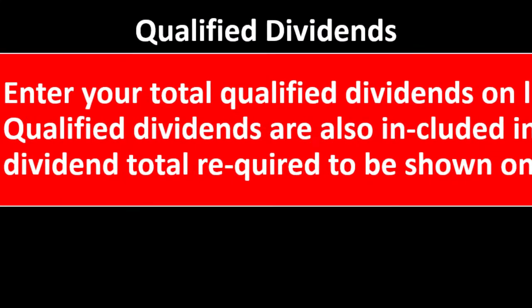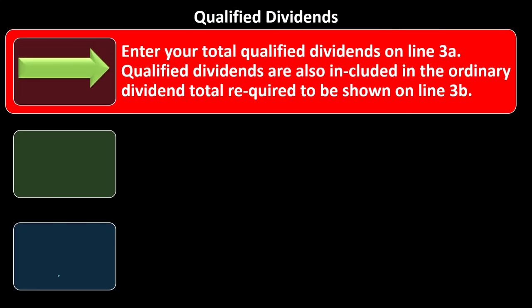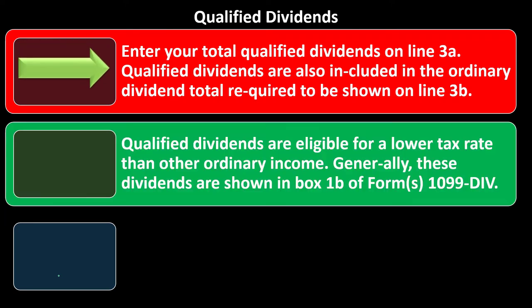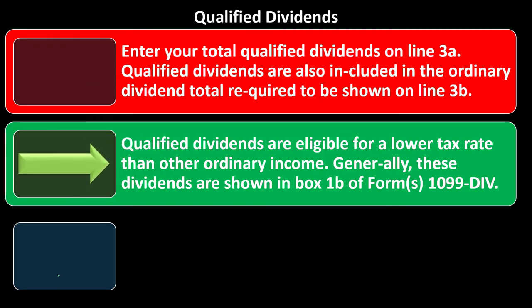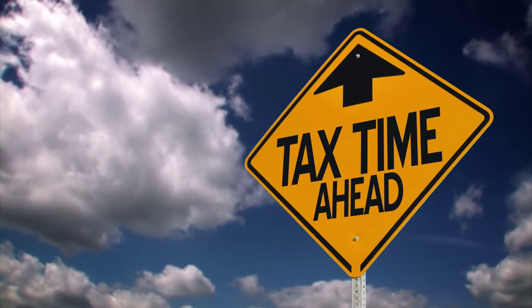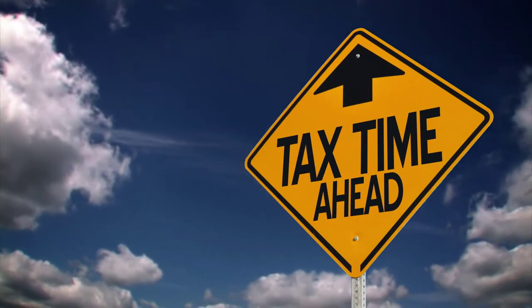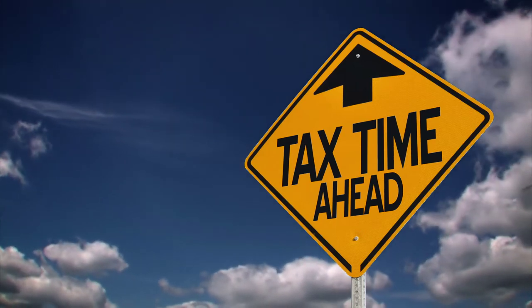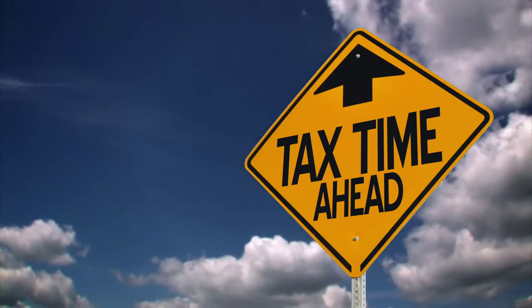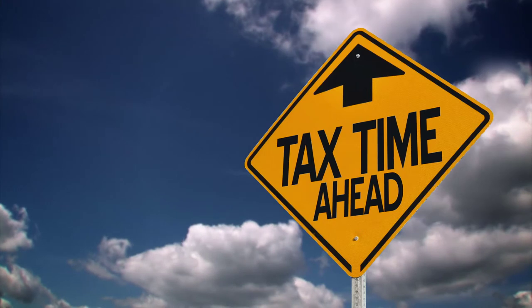Qualified dividends: enter your total qualified dividends on line 3a. Qualified dividends are also included in the ordinary dividend total required to be shown on line 3b. Qualified dividends are eligible for a lower tax rate than other ordinary income - that's going to be the benefit. The actual benefit you get is going to be combined in with the tax calculation, which usually comes from the tables, and we typically rely on the software to do that.